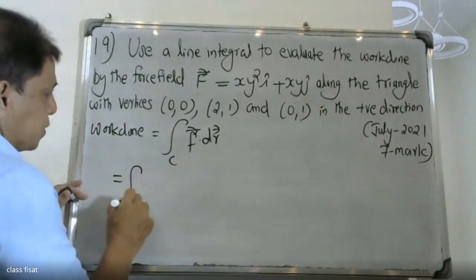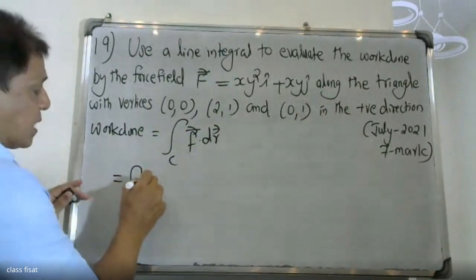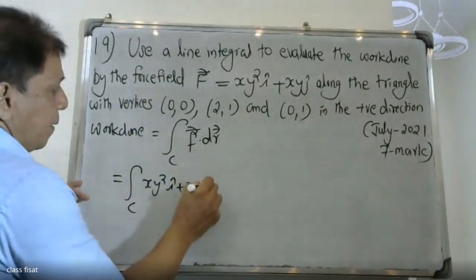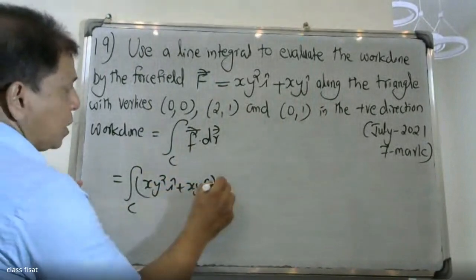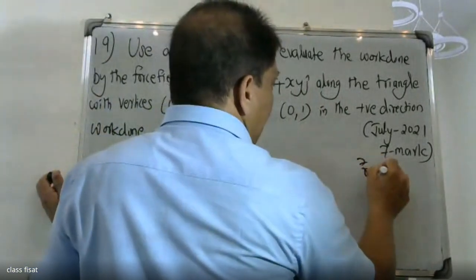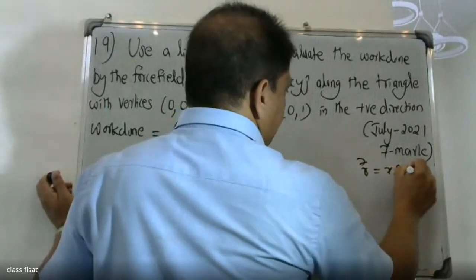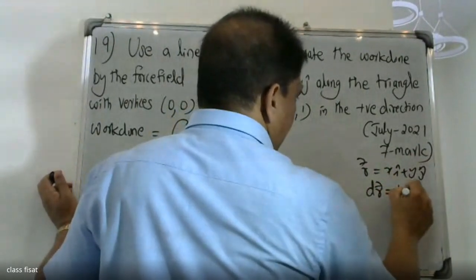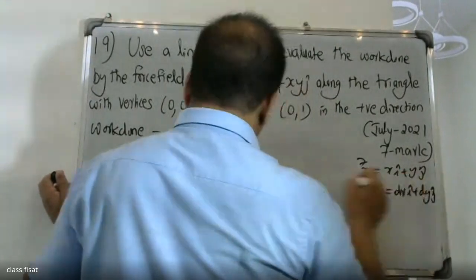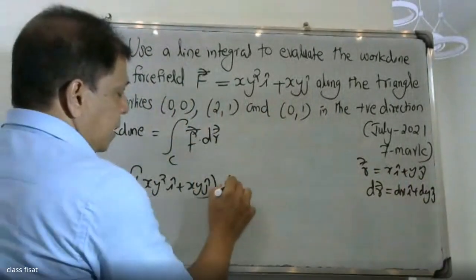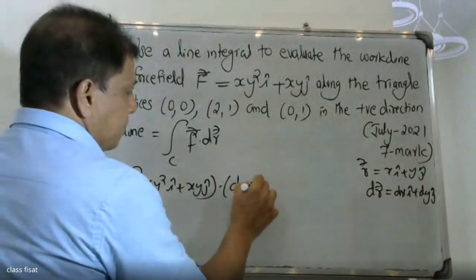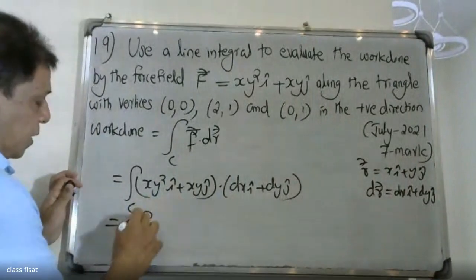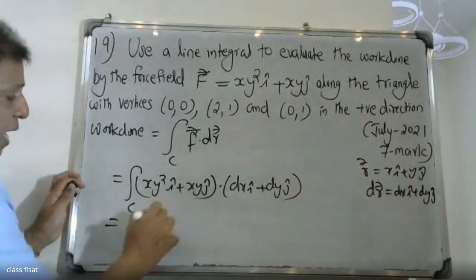The force field is xy² i plus xy j. The vector r is equal to x i plus y j, and dr is equal to dx i plus dy j.